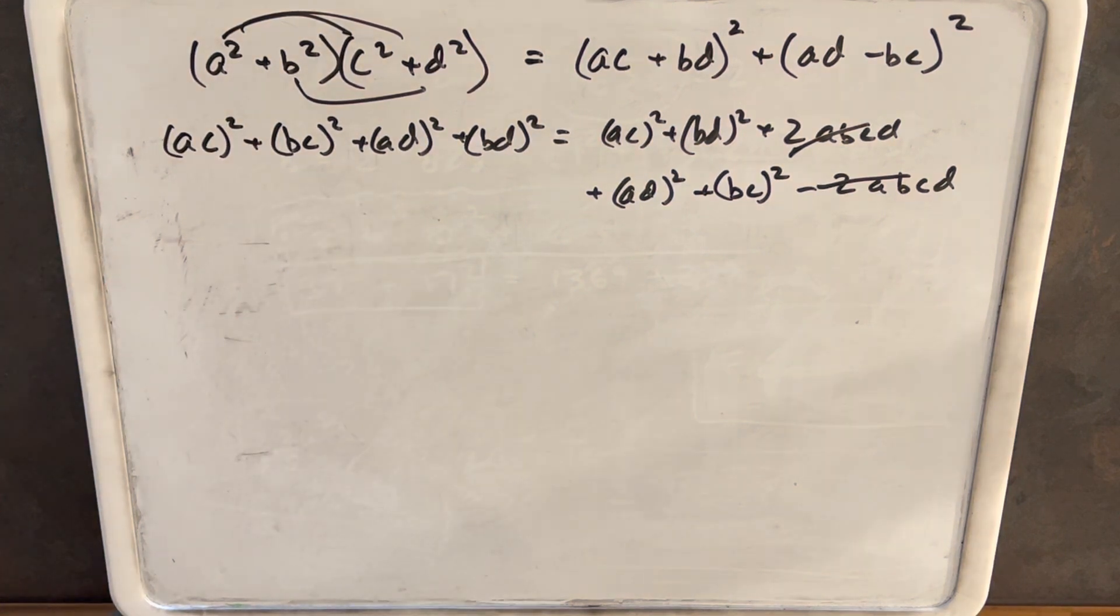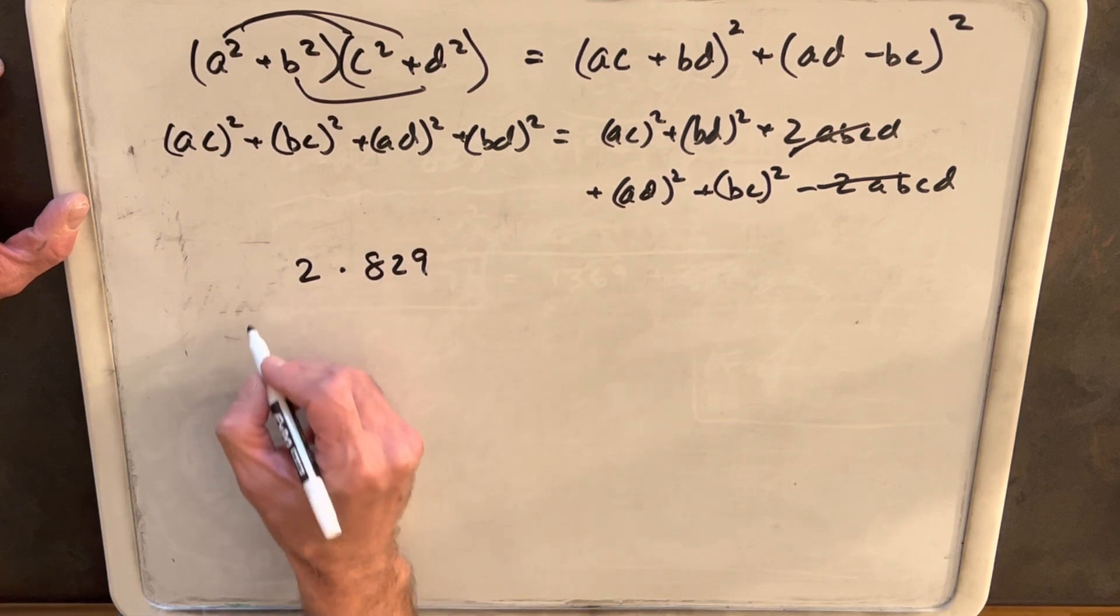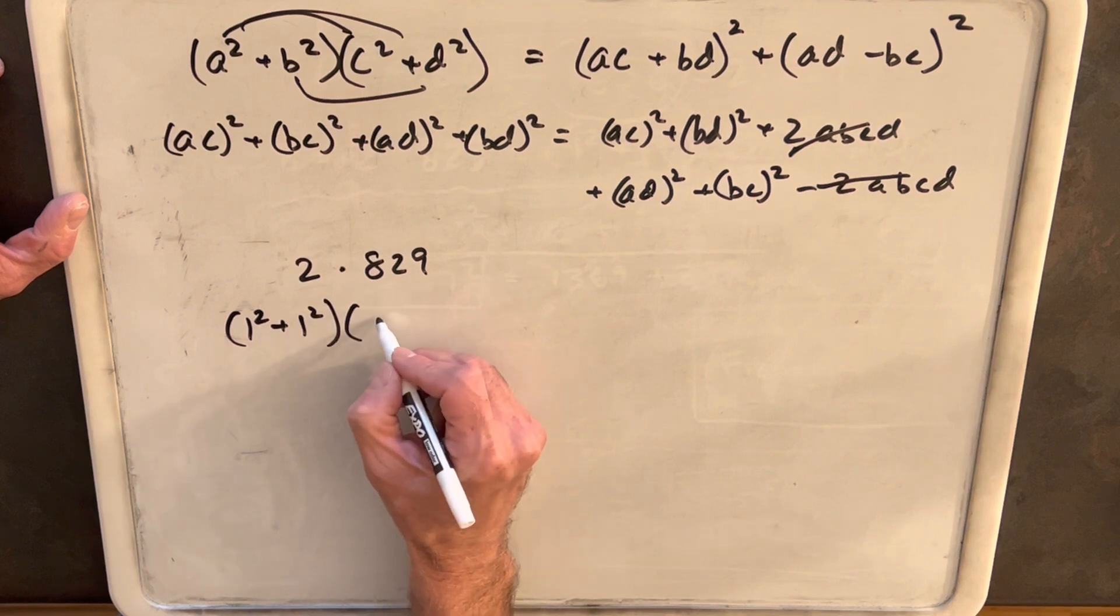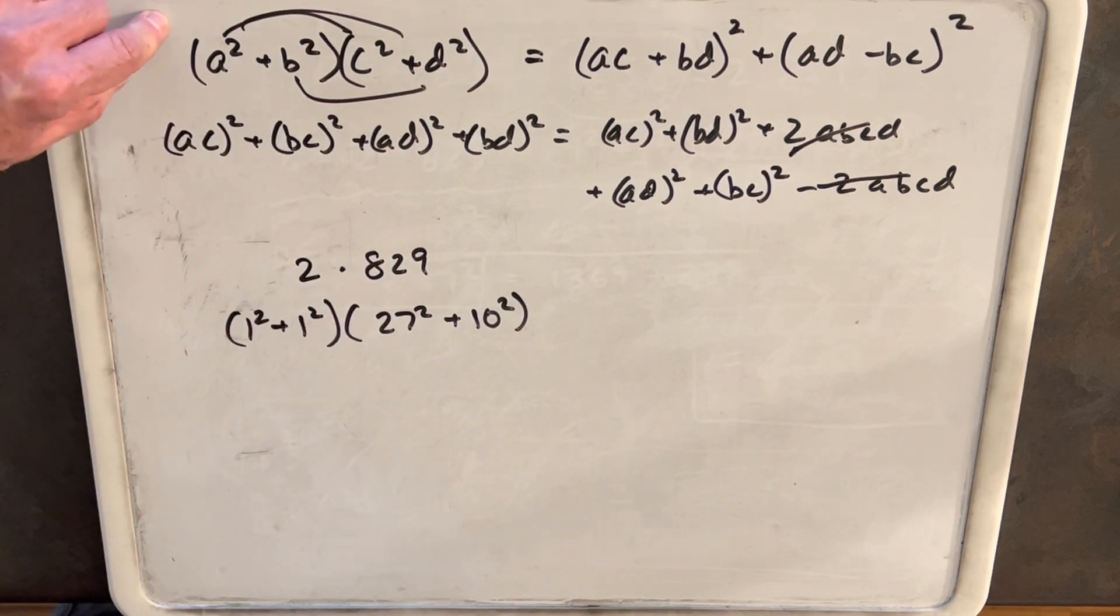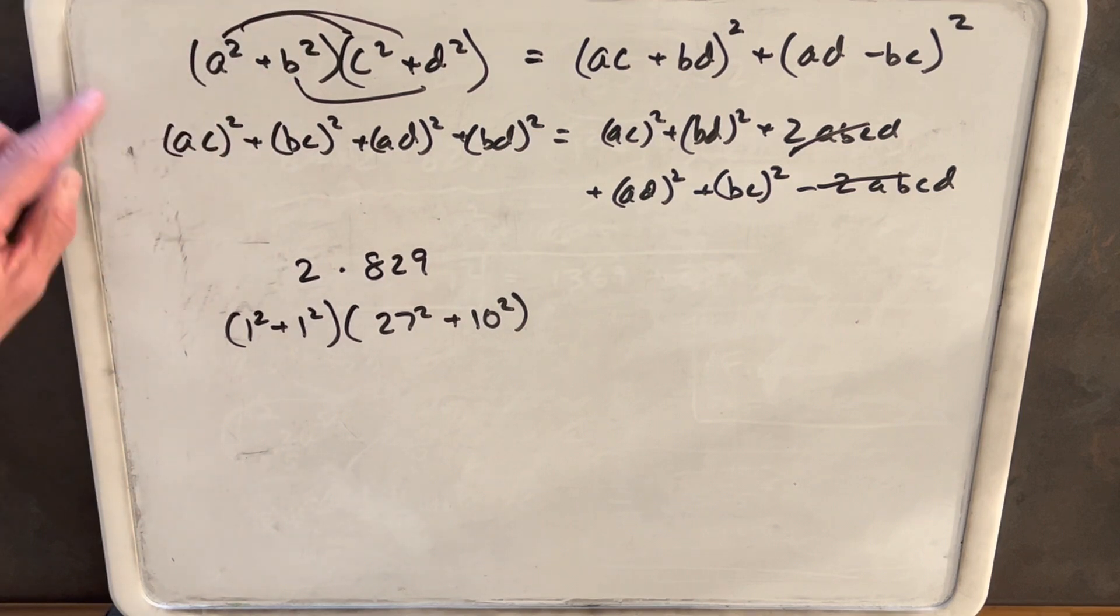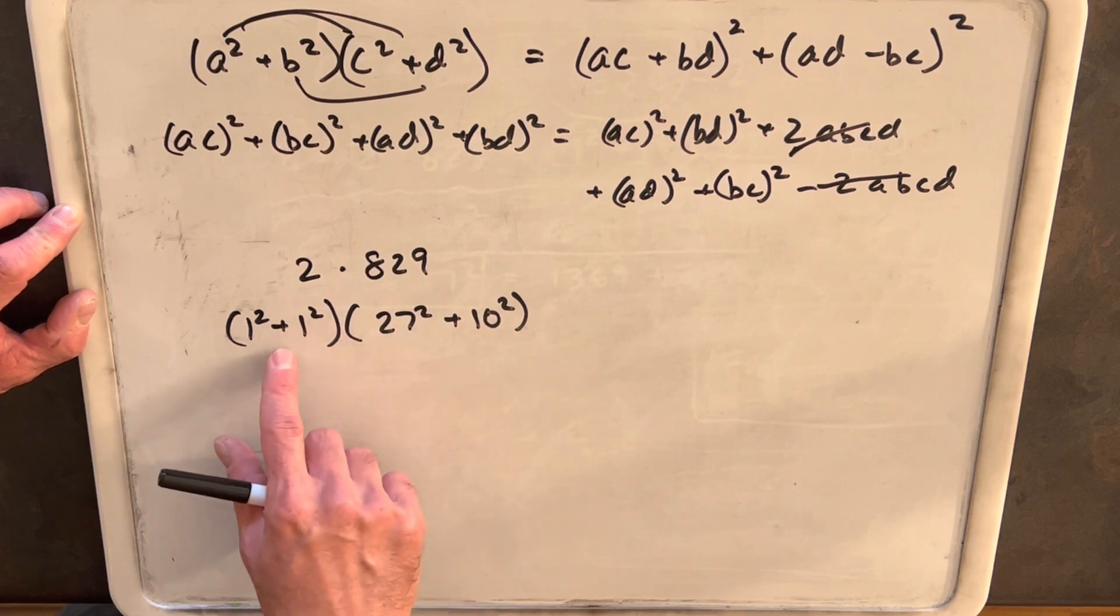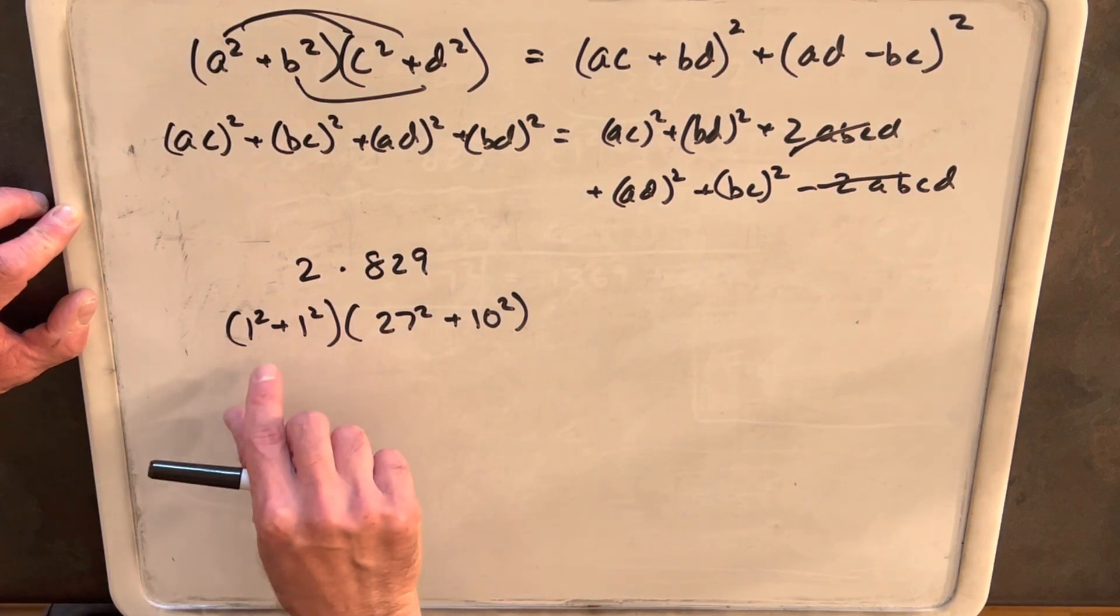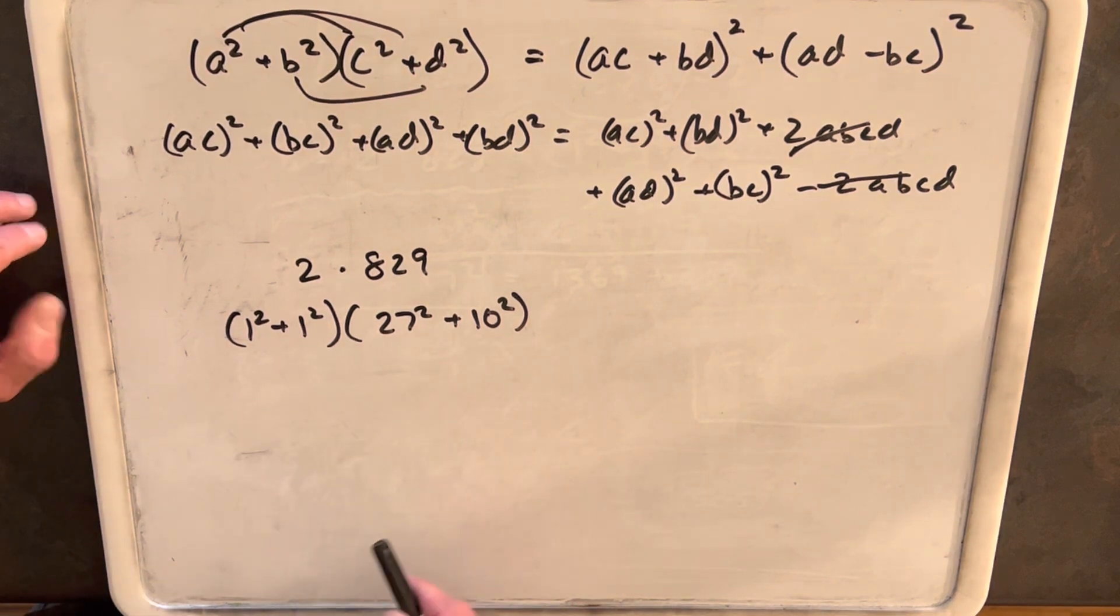One thing that comes up is that the solution you get for the sum of two squares is not necessarily unique. If we go back to the original problem, we had 2 × 829, and we expressed this as (1² + 1²) × (27² + 10²). From this formula, you'll notice that because it's addition, you could flip the terms, and if you multiply it out a different way, you'd get two solutions, so the solution wouldn't be unique. But in this case, there's only one way to write 829 as two squares—27² + 10²—and having two ones here, it doesn't matter if we flip these or how we multiply this out. We get the same answer, so that's how we end up with a unique solution to our original problem.